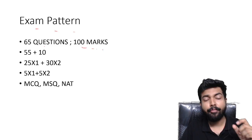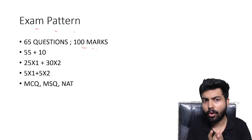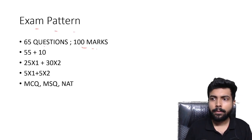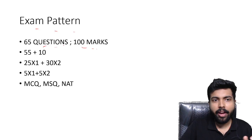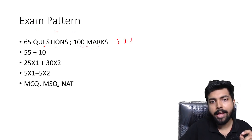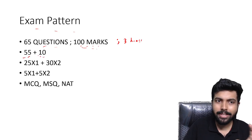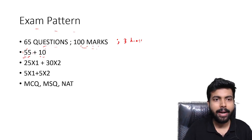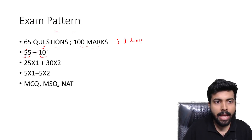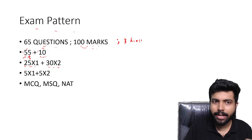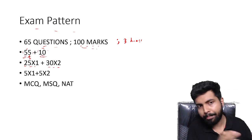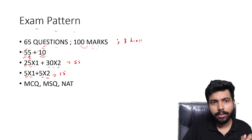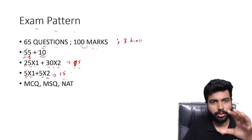Now let's talk about the exam pattern. There will be 65 questions for 100 marks, and the time will be 3 hours. There are 55 questions from Mathematics and Civil Engineering core, and 10 questions from Aptitude. Out of the 55, there are 25 one-mark questions and 30 two-mark questions. From the 10 Aptitude marks: 5 one-mark and 5 two-mark questions. So 55 core questions account for 85 marks and 10 Aptitude questions account for 15 marks.